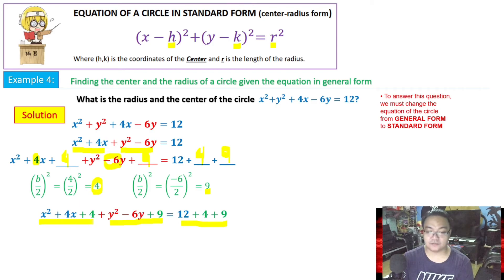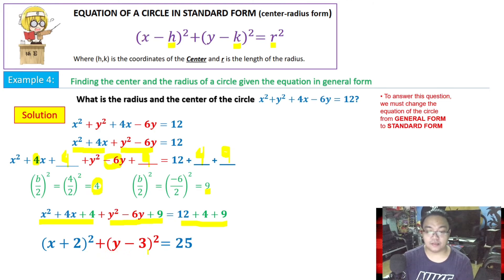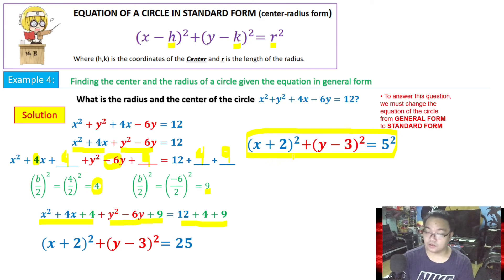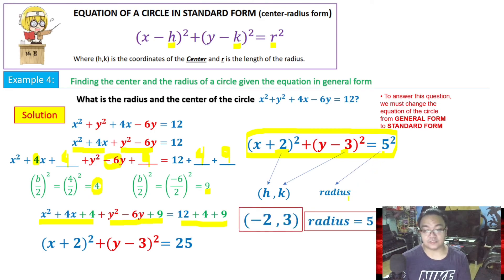Factoring the perfect square trinomials: x squared plus 4x plus 4 factors to (x plus 2) squared, and y squared minus 6y plus 9 factors to (y minus 3) squared. The right side: 12 plus 4 plus 9 equals 25, which we write as 5 squared. So the equation in standard form is (x plus 2) squared plus (y minus 3) squared equals 25. Therefore the center is at (negative 2, 3) and the radius is 5.